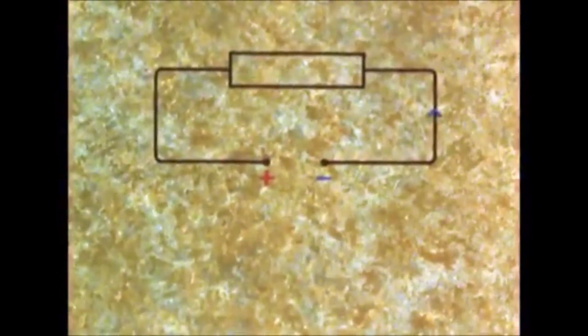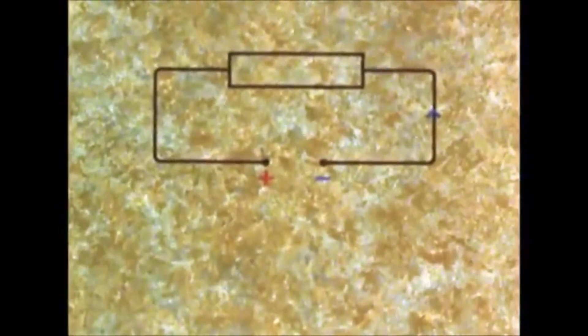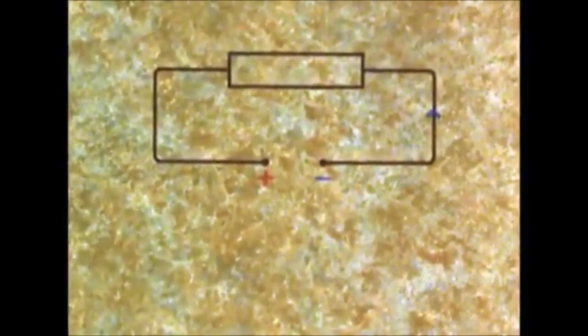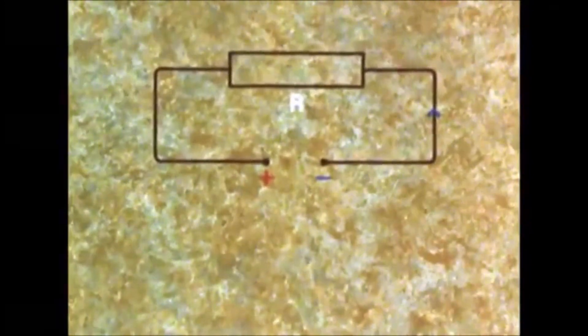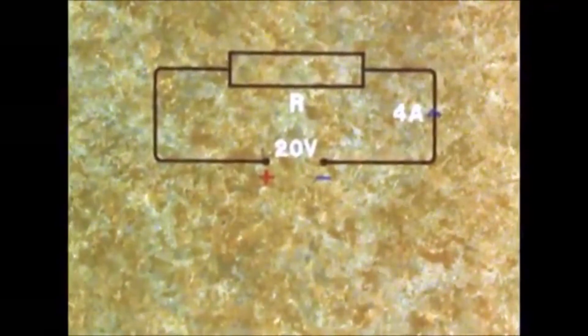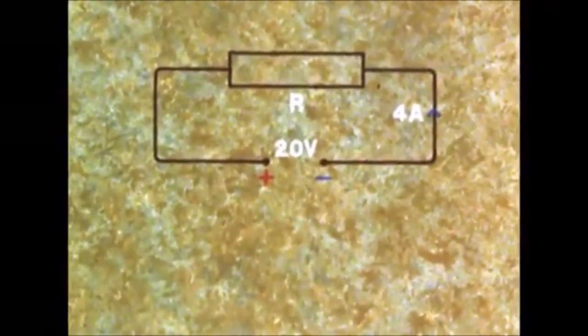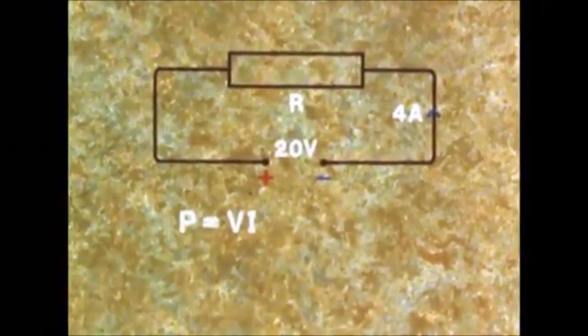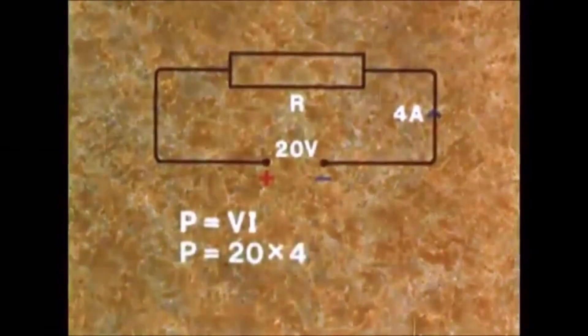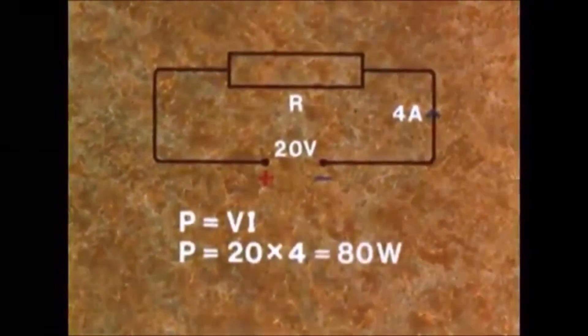Perhaps we should try a few examples. You might want to calculate the power absorbed by a resistor when the applied voltage is 20 volts and the current flowing is 4 amps. Well, P equals VI, which equals 20 times 4, equals 80 watts.